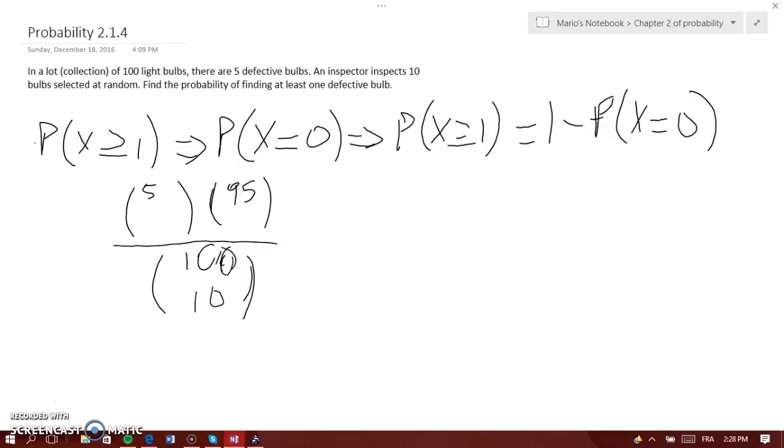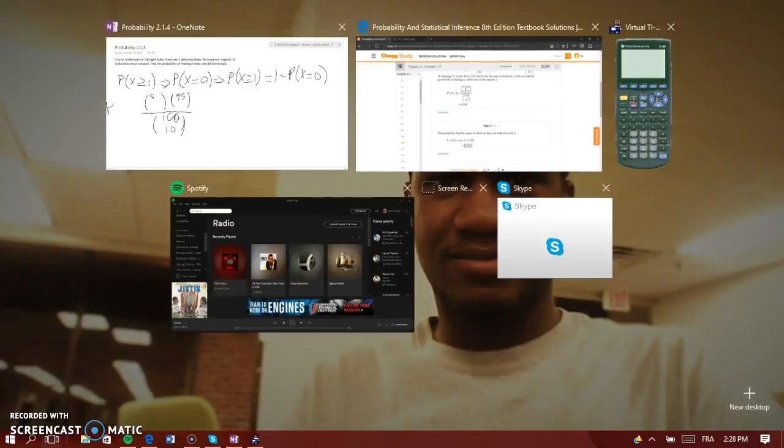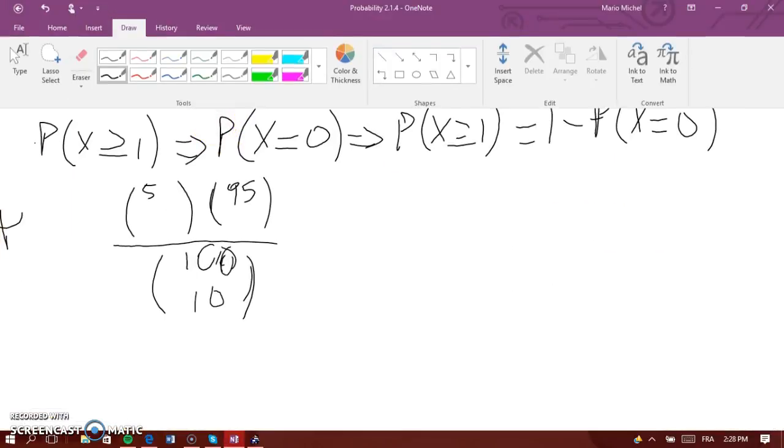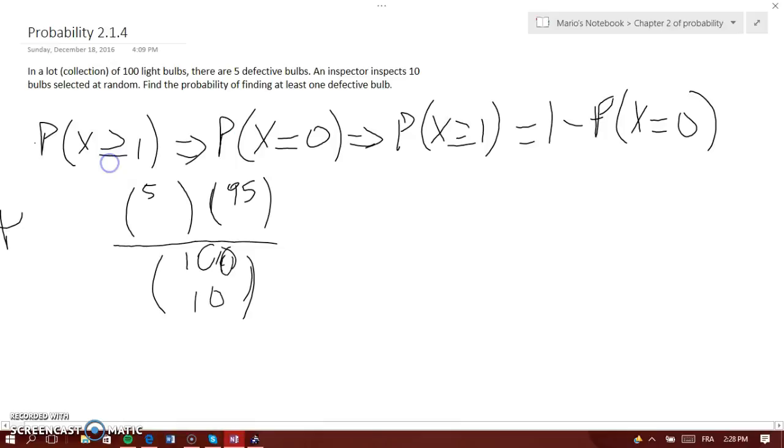Instead of looking for at least one defective, we're looking for the probability that there are no defective light bulbs. So it'll be 0 defective and 10 that are good.